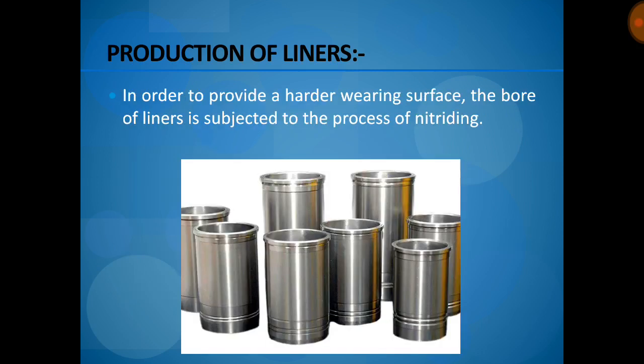In order to provide a harder bearing surface, the bore of the liners is subjected to a process called nitriding. Nitriding is a heat-treating process in which nitrogen is diffused into the surface of the metal to provide a case-hardened surface. It is usually performed on low-carbon and medium-carbon steels, and sometimes on titanium, molybdenum, and similar materials.